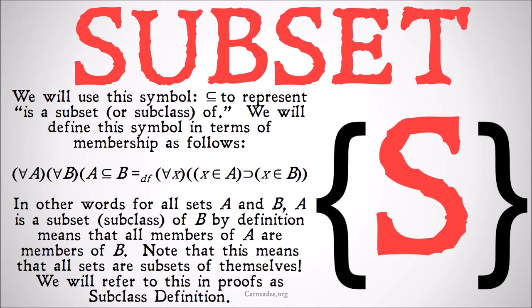We're going to use this symbol — that kind of backwards implication sign with a line under it — to represent 'is a subset of' or 'is a subclass of.' Class is, as we will discover, a broader term than set, so any of these things I say 'set of,' unless I'm explicit that it's not a class, they can apply to classes too. This is really 'is a subclass of' once we get to the difference between classes and sets in class-set theory, but for folks working with basic set theory, you can call it subset as well.